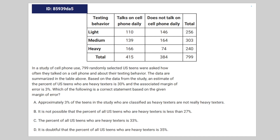We're given the following math problem. In a study of cell phone use, 799 randomly selected U.S. teens were asked about how often they talked on a cell phone and about their texting behavior. The data is summarized in the table above. Based on the data from the study, an estimate of the percent of U.S. teens who are heavy texters is 30%. The associated margin of error is 3%. Which of the following is a correct statement based on the given margin of error?